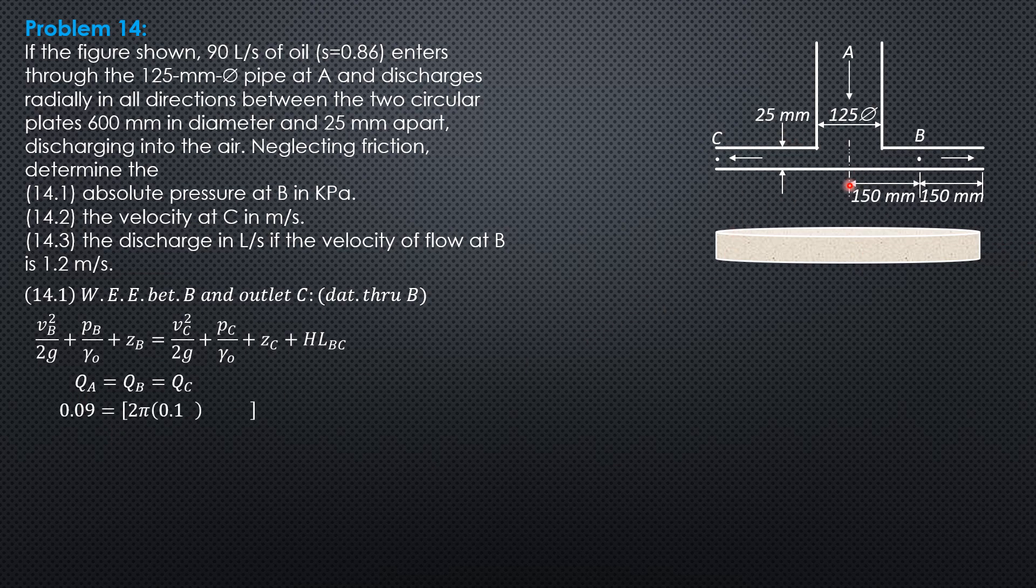equals 2π times radius at B (0.15) times thickness (0.025) times velocity at B. It also equals 2π times radius at C (0.3) times thickness (0.025) times velocity at C. We can compute velocity at B, which equals 3.82 meters per second.